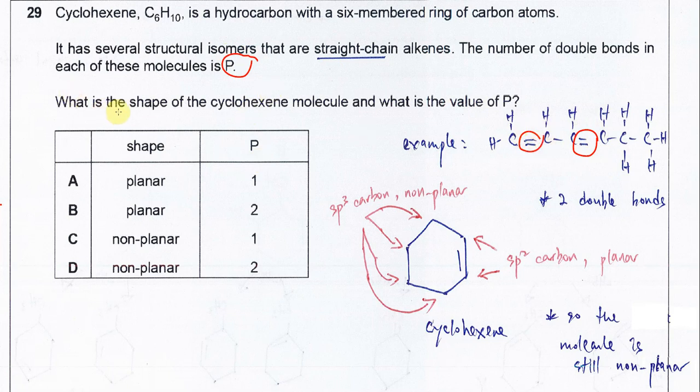And what is the shape of cyclohexene? This one we have to look at the hybridization of the carbon in the molecule. For the C=C double bond, the carbons are sp2 carbon. And this one they are planar, means the geometry is trigonal planar.